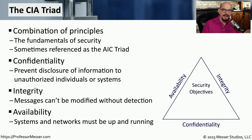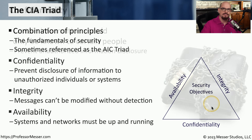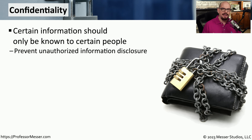You'll often see the triad written as a triangle, with each leg of the triangle listing confidentiality, availability, and integrity as the security objectives. One of the biggest challenges we have in IT security is making data available to others, but making sure that availability is only to the right people. We refer to this as confidentiality.